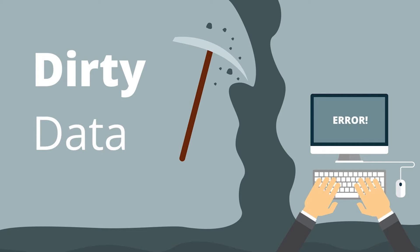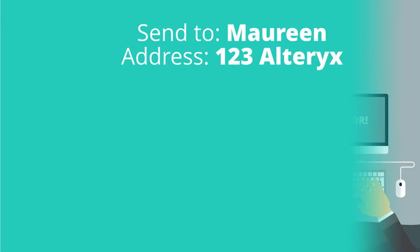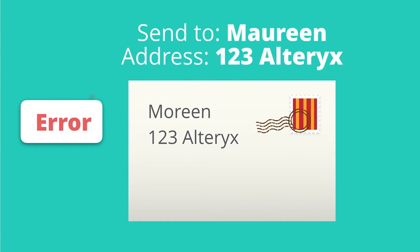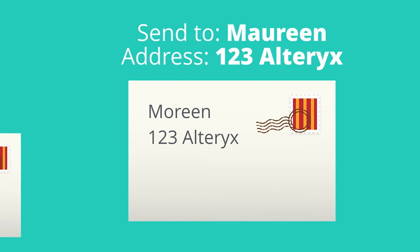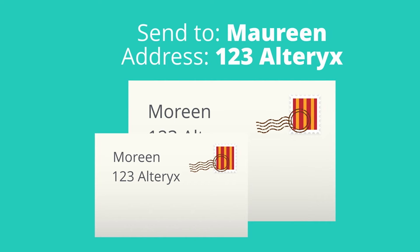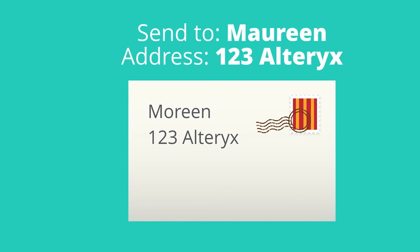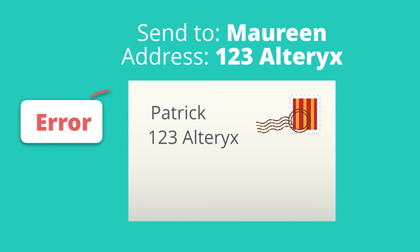Let's look at a few examples of dirty data. How many times has your name been spelled wrong on a piece of mail you've received? That was probably caused by a typo when someone manually entered your name. How about when you get two pieces of the same junk mail? That's a problem with duplicate records for the same person. What about when you get a piece of mail addressed to someone who used to live at your address? Well, that's also a form of dirty data because it's not accurate and that person has moved on.